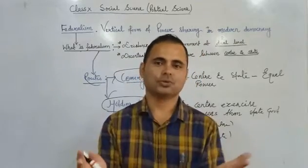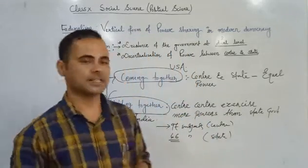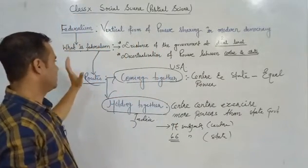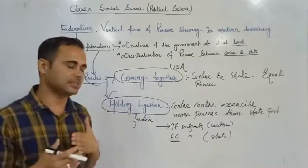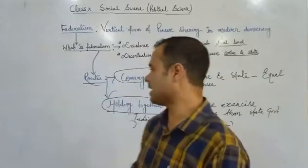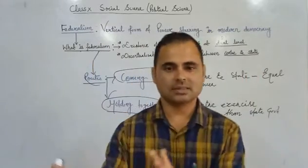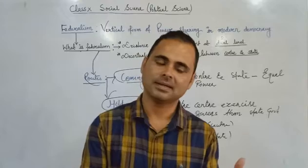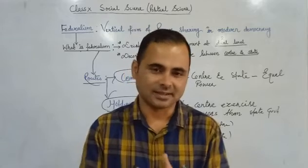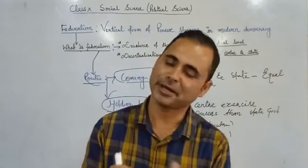So I hope I was able to help you understand today. We have discussed what federalism is, what are the features by which we can identify federalism, and the roots of federation — coming together and holding together — which give us two types of federation. This is the first video of the chapter and I will discuss the rest in the next video. Watch carefully, listen, note down, and refer to the text. Stay safe and stay healthy. Thank you so much, bye.